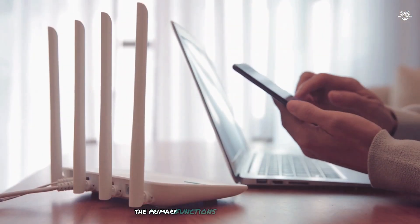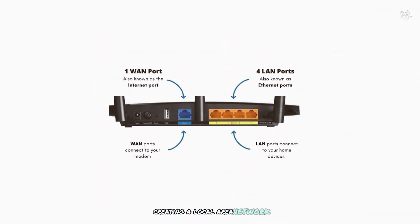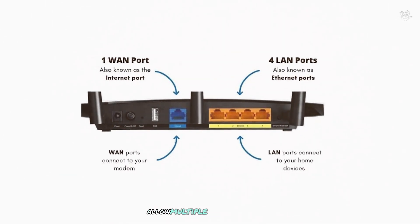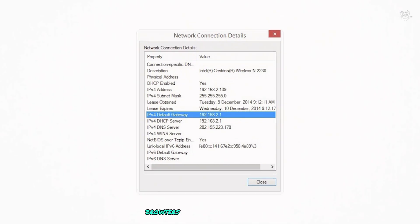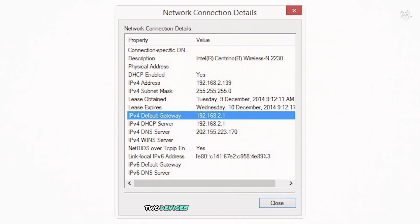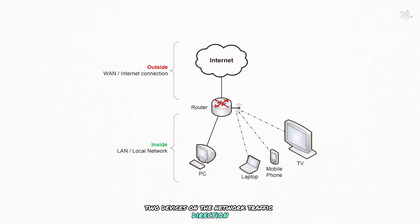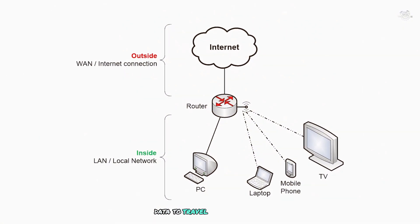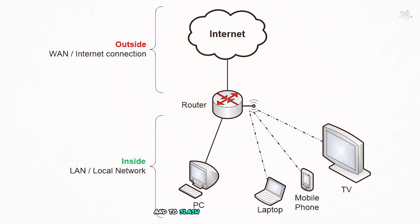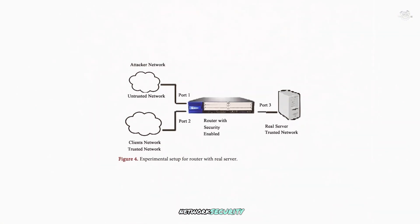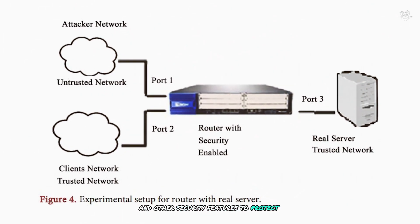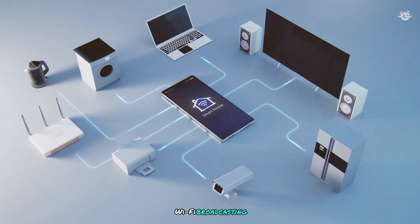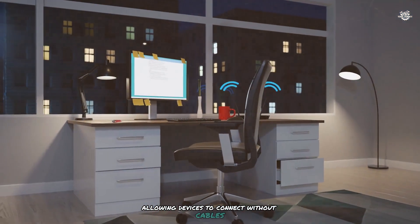The primary functions of a router include: creating a local area network, allowing multiple devices to connect and communicate with each other; IP address assignment, where routers assign local IP addresses to devices on the network; traffic direction, determining the best path for data to travel; network security through built-in firewalls and other security features; and Wi-Fi broadcasting, creating wireless networks so devices can connect without cables.